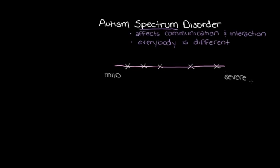While autism spectrum disorder is a spectrum and everyone has different experiences, there are a few key signs that are common among people with autism spectrum disorder. We're going to check these out so we can understand a little bit more about what it is. There are a few different ways to characterize these common signs — I'm going to use three categories, starting with communication and social signs.